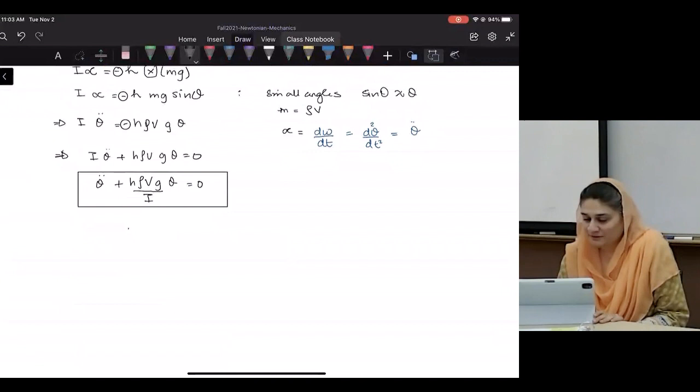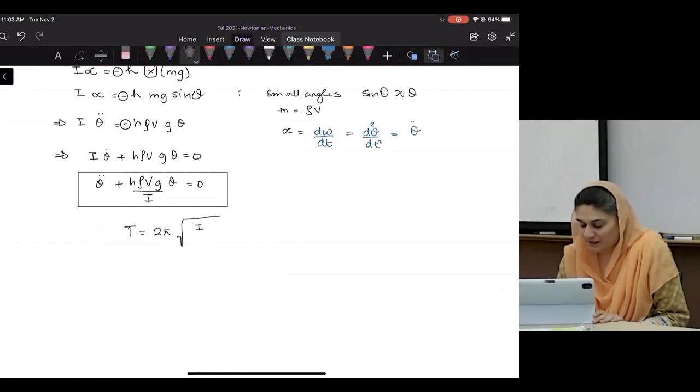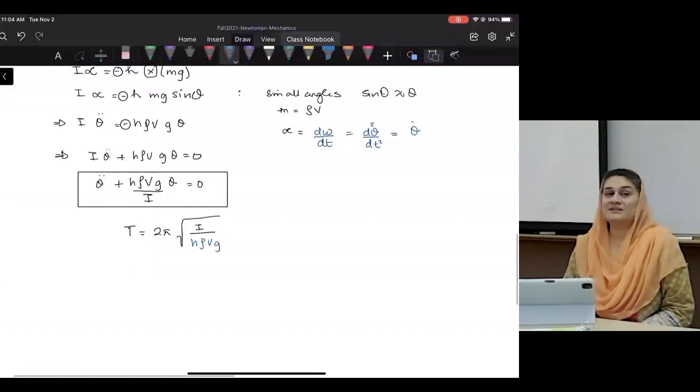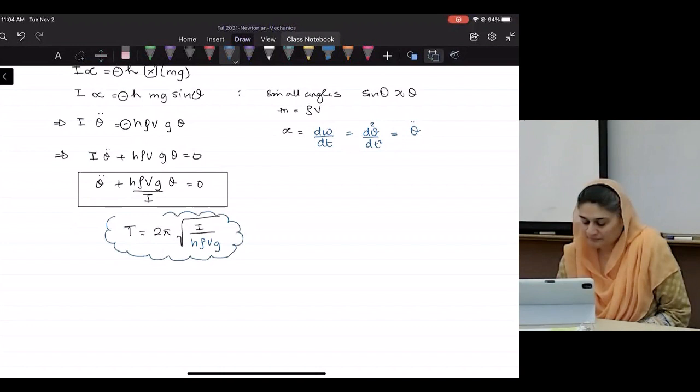So as always, this is our equation of motion. So then what will be the rho? Two pi square root of I over H rho V G. That's how we find the period.